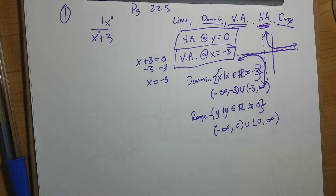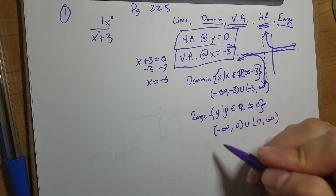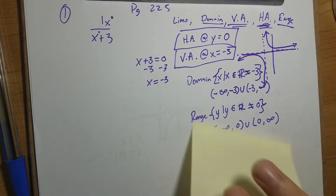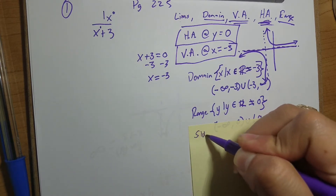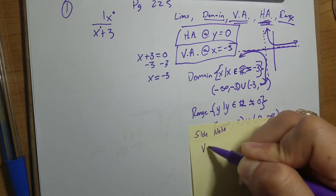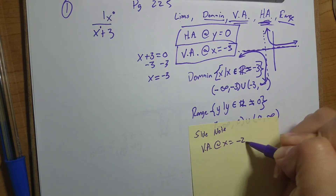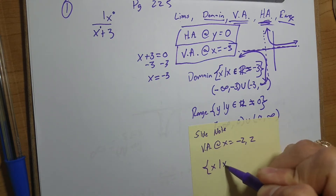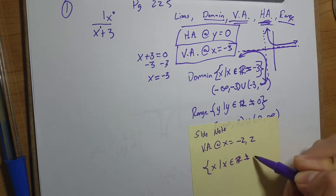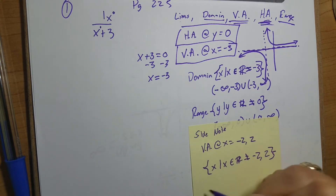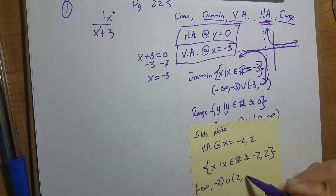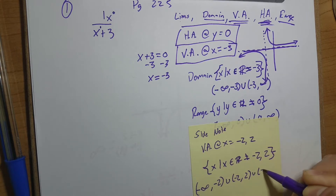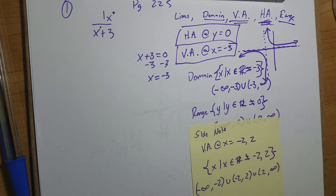As a side note: what would you do if there were more than one vertical asymptote? For example, if the vertical asymptotes were at x equals negative two and x equals two, you could write the domain as x such that x is a real number except negative two and two. In interval notation that would be negative infinity to negative two, union negative two to two, union two to positive infinity. Nothing really changes — it just gets longer.